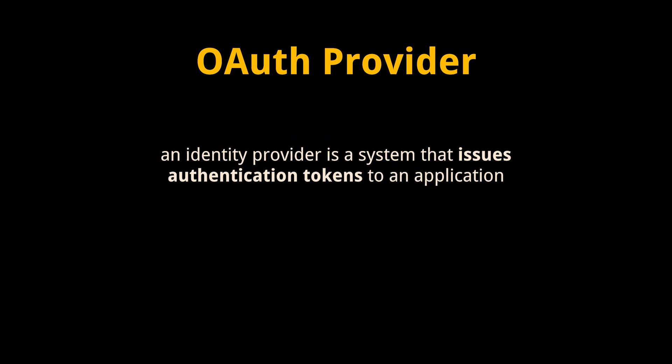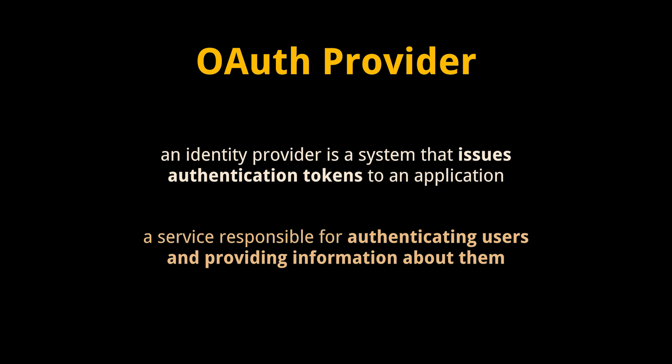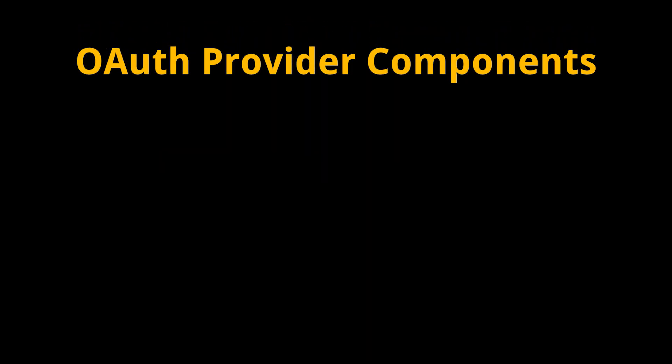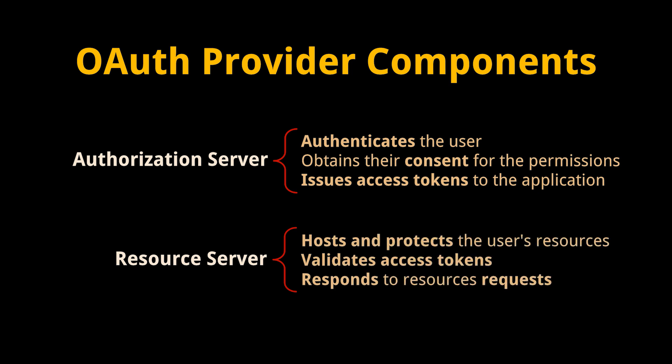In OAuth2, an identity provider is a system that issues authentication tokens to an application. It's a service responsible for authenticating users and providing information about them, such as user attributes and permissions. An OAuth2 provider typically includes two main components: an authorization server, responsible for authenticating the user and obtaining their consent for the requested permissions and issuing access tokens to the client application; and the resource server, which hosts and protects the user's resources and validates access tokens to accept or respond to protected resource requests.